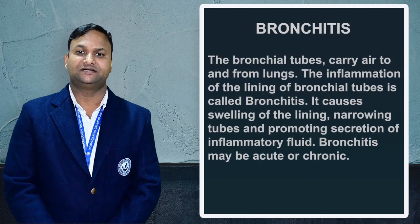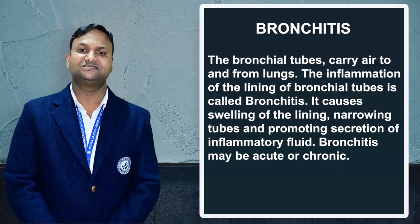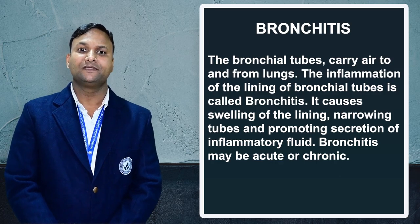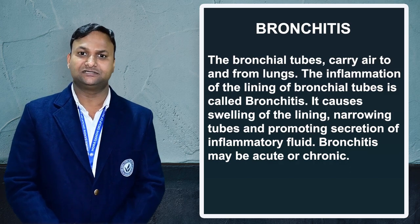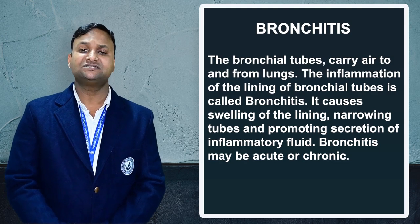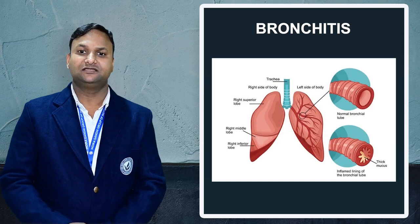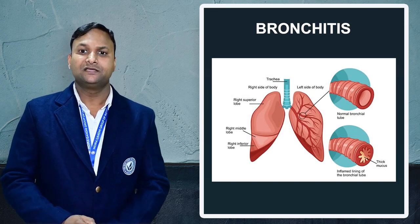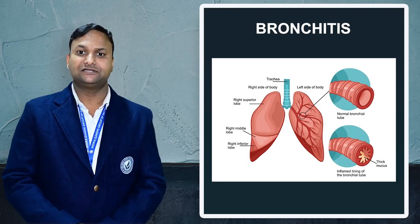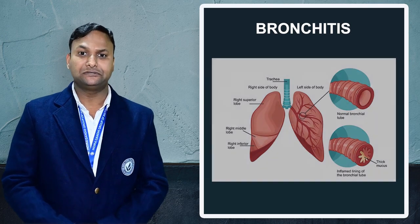First, the definition of bronchitis. Bronchitis is an inflammation of the mucous membranes, otherwise the lining of the bronchioles. There is inflammation around the bronchioles especially, and this inflammation can cause excessive secretions around the bronchioles.